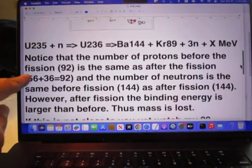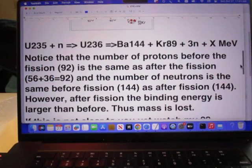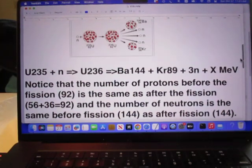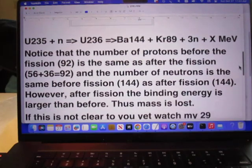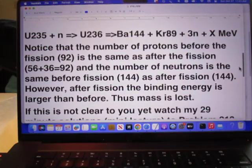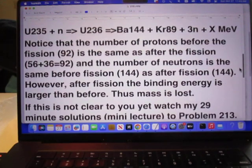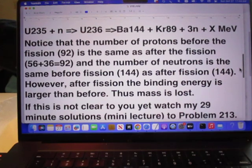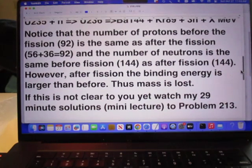See, this is the barium. And that is the krypton. And the number of neutrons is the same before fission, 144, and after fission.